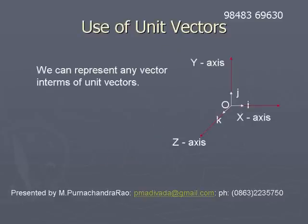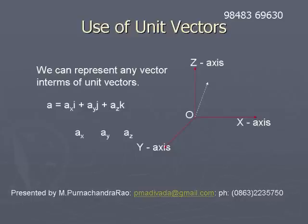Use of unit vectors: the unit vectors are useful in representing a vector in terms of its components — x component, y component, and z component. If there is a vector ā whose x component is ax, y component is ay, and z component is az, these are scalar quantities.